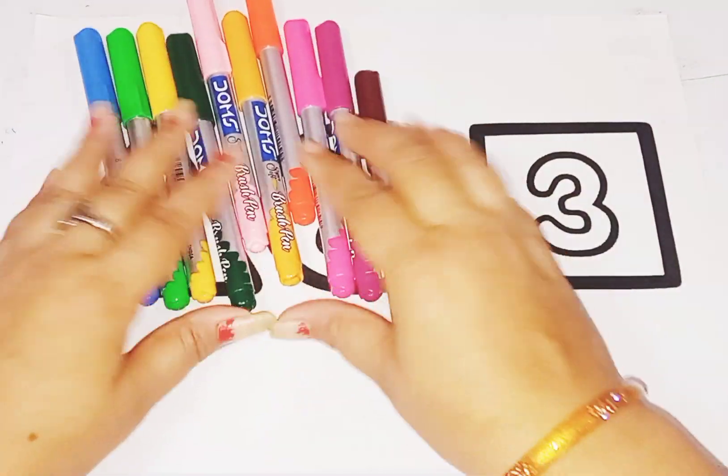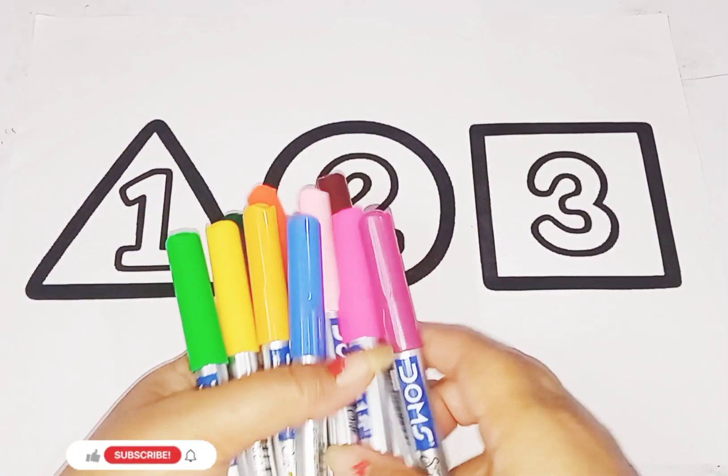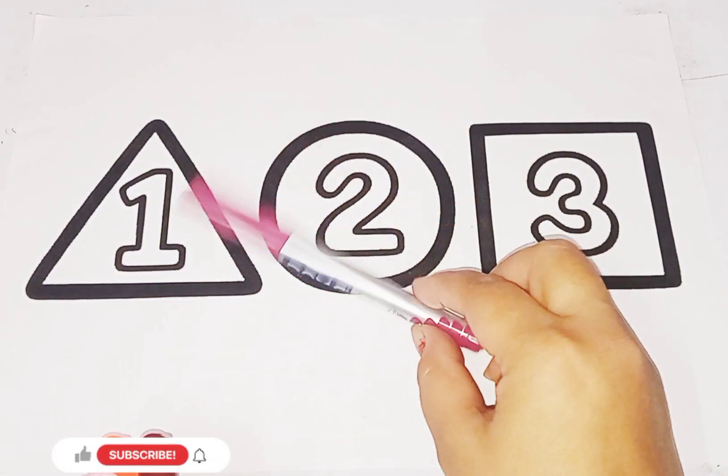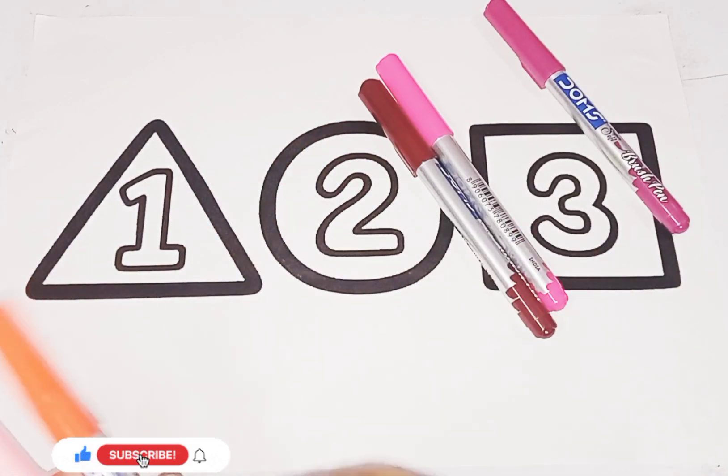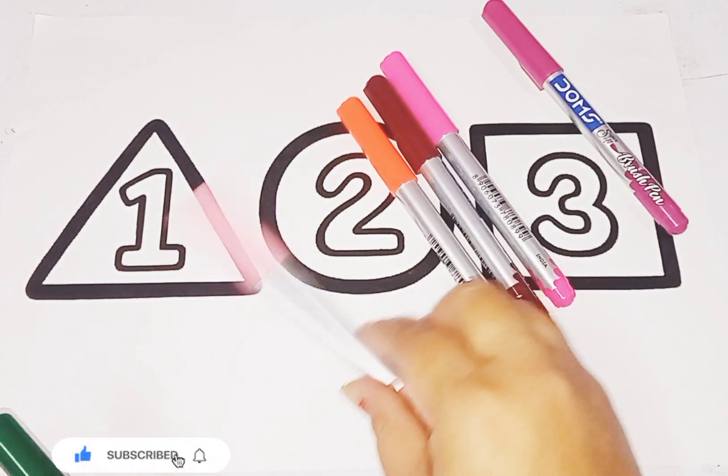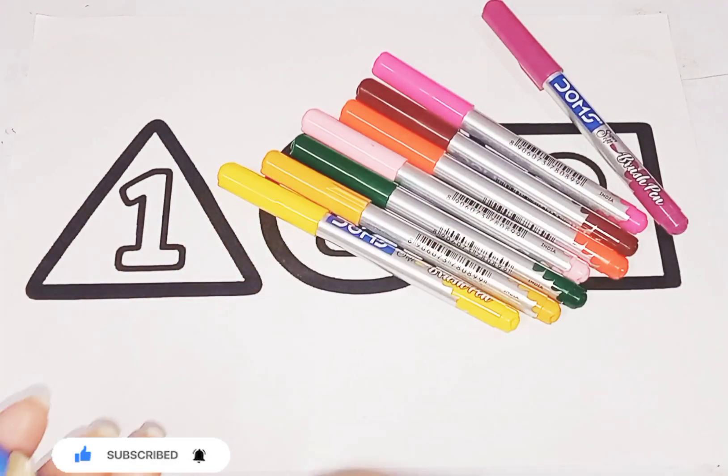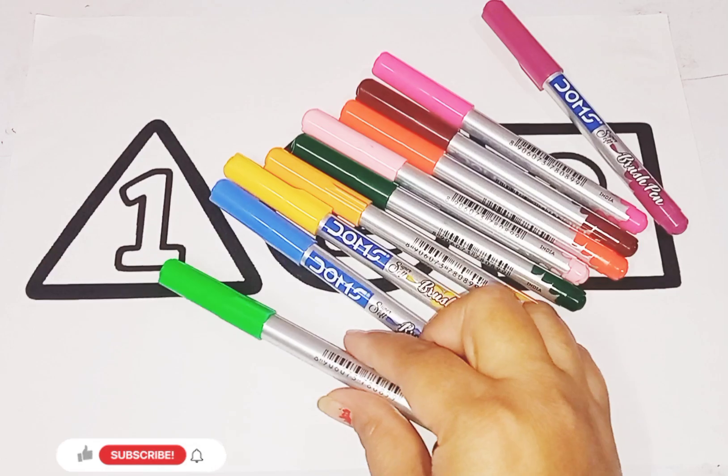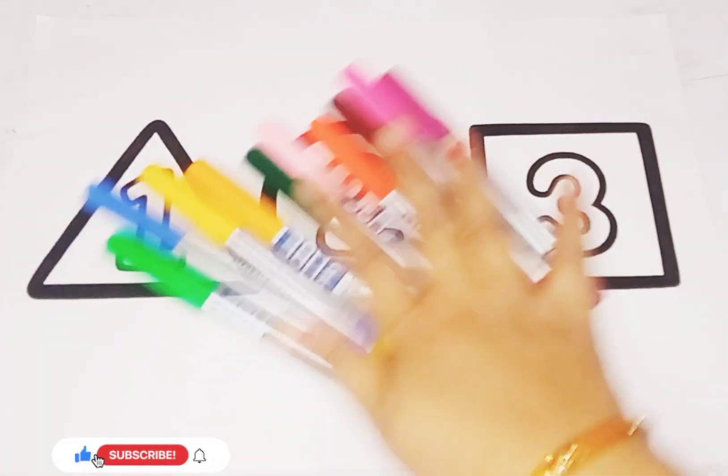These are colors, cute cute colors. Let's learn some colors name. This is purple color, pink color, brown color, orange color, light pink color, green color, mustard color, yellow color, blue color, parrot green color. These are colors.